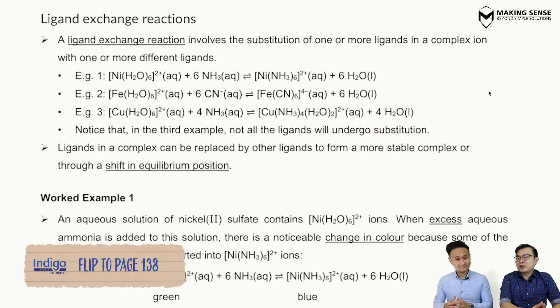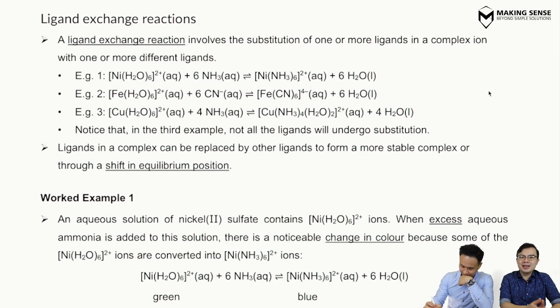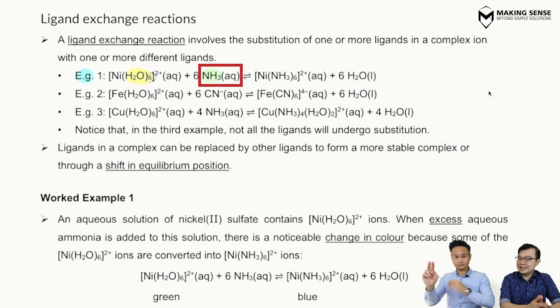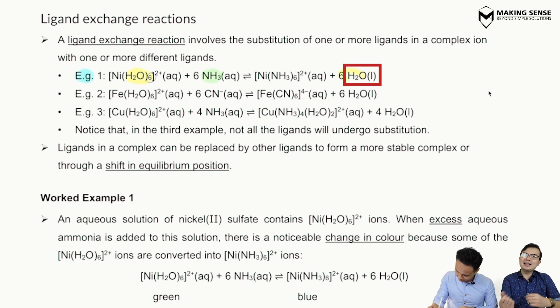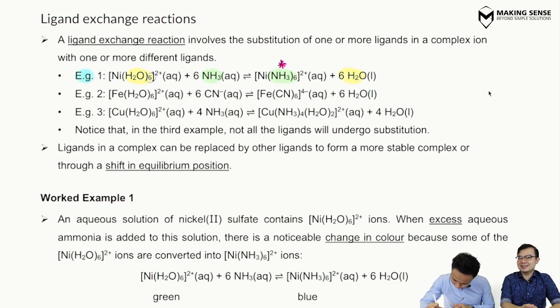In exams, you need to memorize specific ligand exchange reactions. One important example: we start with the nickel aqua complex — nickel bonded to six water molecules. If we add aqueous ammonia, a ligand exchange occurs: H₂O ligands come out and NH₃ replaces them, forming a new complex containing only NH₃ as ligands. This happens because the nickel–ammonia complex is a more stable complex.